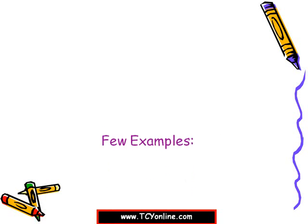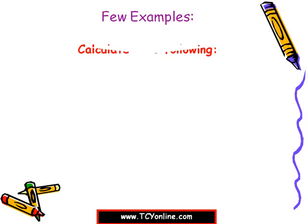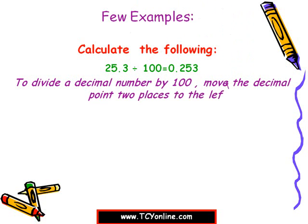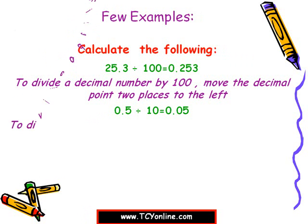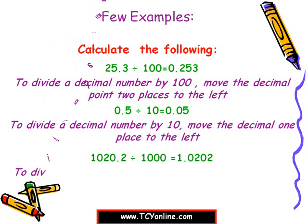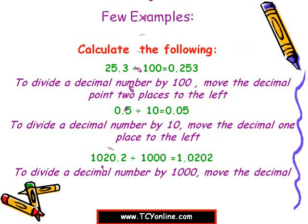Let's consider a few examples. First, 25.3 divided by 100: we move the decimal two places to the left, giving us 0.253. Next, 0.5 divided by 10: we move the decimal one place to the left, so we get 0.05. Finally, 1020.2 divided by 1000: we move the decimal three places to the left, so 1020.2 becomes 1.0202.